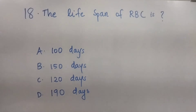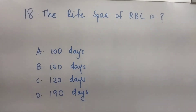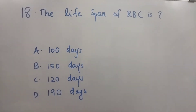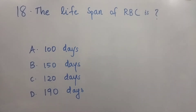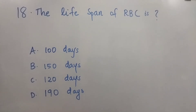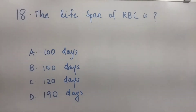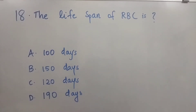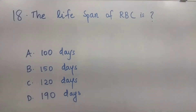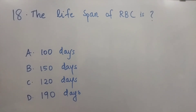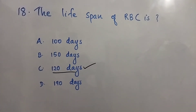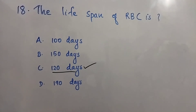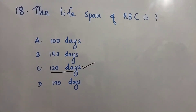Question number 18: The lifespan of RBC is — Option A: 100 days. Option B: 150 days. Option C: 120 days. Option D: 190 days. The right answer is Option C, 120 days. The lifespan of RBC is 120 days.